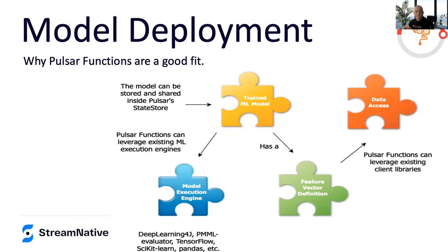Why are Pulsar functions a good fit for this? Models can be shared using Pulsar's internal state store — you have a model suite and can publish those things internally and hand off that model directly to a Pulsar function. Pulsar functions can also leverage existing machine learning execution libraries — Deep Learning for J, any sort of PMML evaluator, TensorFlow, etc. It supports a variety of plugins as long as there is a Java, Python, or Go client for that particular machine learning execution environment. Similarly, Pulsar functions can leverage existing client libraries to retrieve data — any data store with a client library for Java or standard SQL, including feature stores.